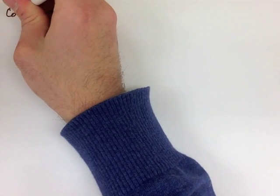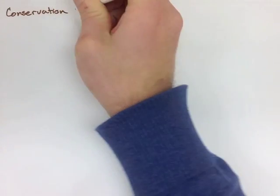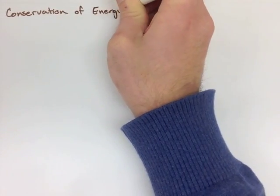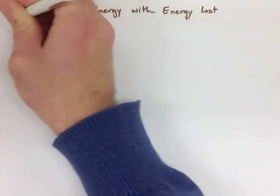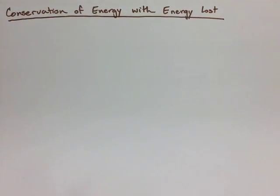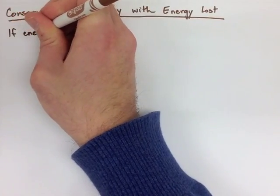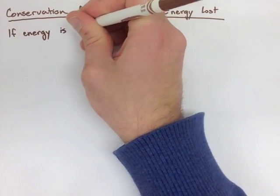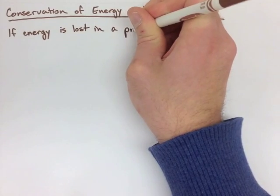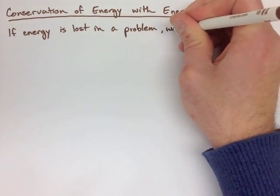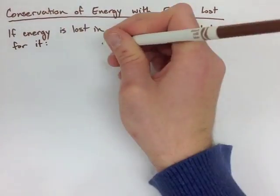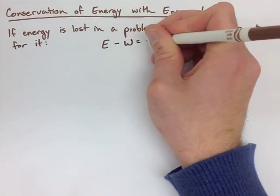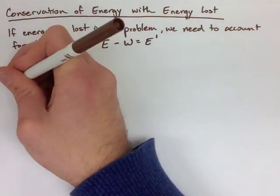When we're dealing with the conservation of energy, we know that the energy in has to equal the energy out. But sometimes this isn't the case because we lose energy. Normally when we're losing energy, we're losing it to work. If we have energy lost in a problem, we need to account for it using a formula. The way we do that is we have the original energy minus the work equals the final energy of the system.